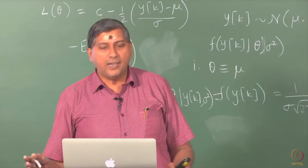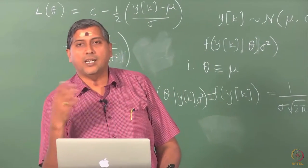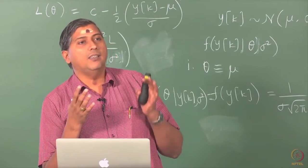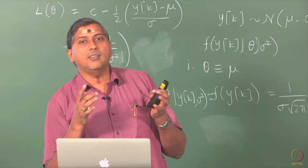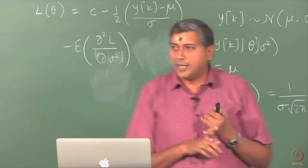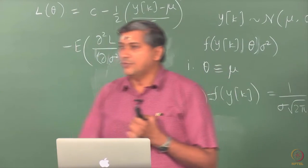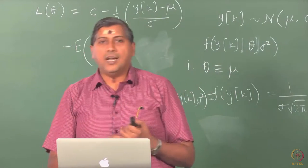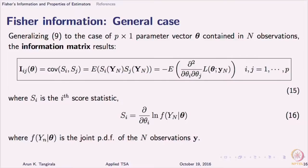Now we move on to the general case. The general case is that I have n observations and I may have p parameters to estimate. The moment I have p parameters, my information now becomes a matrix.